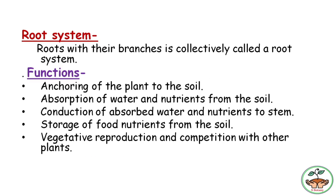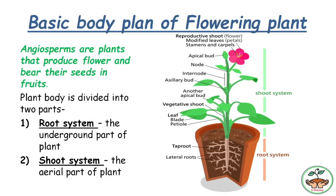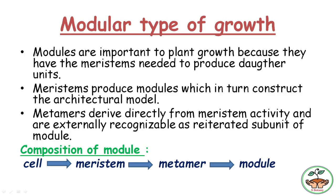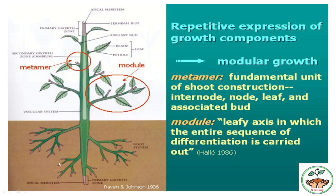So we have seen the basic body plan of the flowering plant — what angiosperms are, and how we can differentiate the plant body into the root system and the shoot system. We have also seen the modular type of growth and how the module is formed by the activity of the metamer, and the metamer is formed by the meristem. That's it for today's video. Please do like, share, and subscribe to our channel. Thank you.